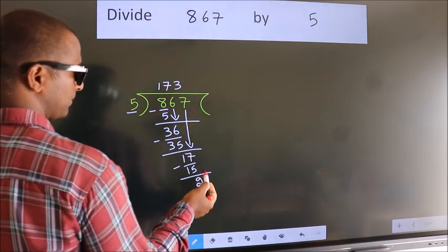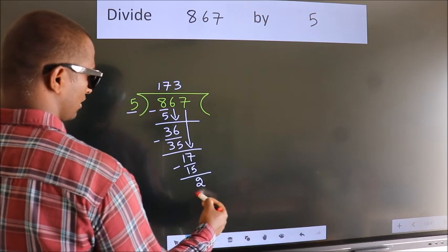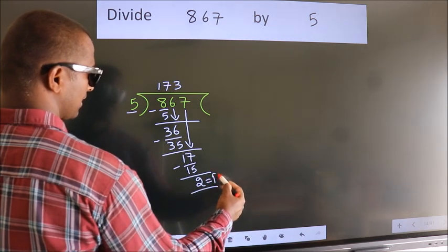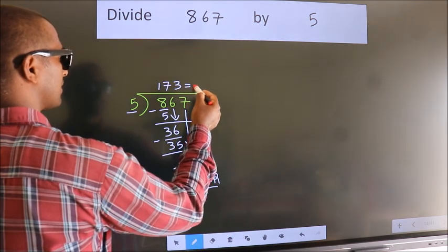No more numbers to bring it down. So we stop here. This is our remainder. This is our quotient.